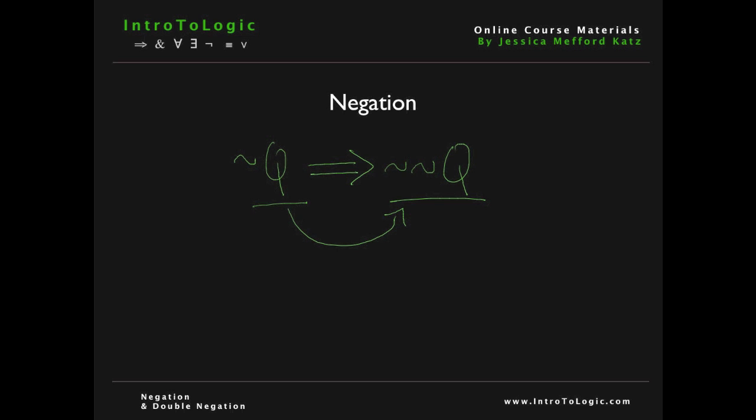Let's do a couple more examples. The negation of the sentence R is NOT R. The negation of the sentence M is NOT M. The negation of NOT L is NOT NOT L.